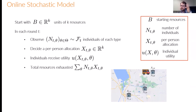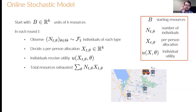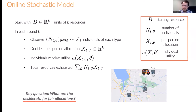Now we can give the mathematical formulation. The truck starts off with a fixed amount B of the K different resources. In each round T, you observe the vector Nt theta drawn from a known distribution Ft of the number of individuals of each type. The allocation algorithm then decides a per person allocation Xt theta of each of the K different resources, and individuals of type theta receive a utility U of X theta. The total resources exhausted in a round is the sum over types of the number of individuals of that type multiplied by the allocation given. The key question is: what are the desiderata to define what a fair allocation is?